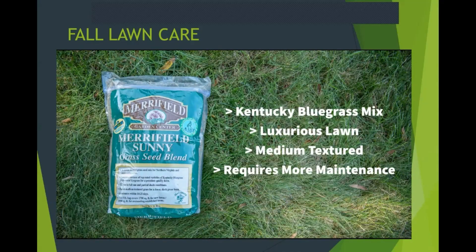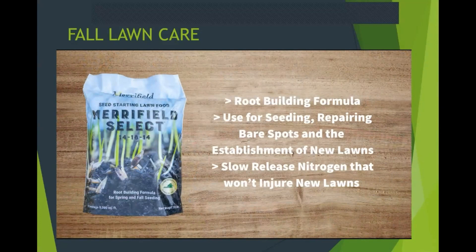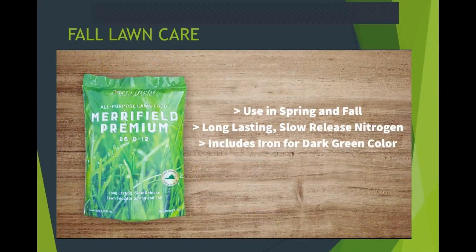We also offer Merrifield Sunny, a Kentucky bluegrass blend that gives that dark blue-green, dense, plush lawn everybody loves, but it requires more maintenance commitment — specifically keeping it watered during hot dry weather and giving it additional fertilizer. We also custom blend two lawn fertilizers. Merrifield Select is a starter lawn food with phosphorus, which enhances germination and establishment of new lawns — use it when seeding, repairing bare spots, or starting a new lawn. Otherwise, use Merrifield Premium, a zero-phosphate slow-release fertilizer that's long-lasting, gives a nice dark green consistent color, and builds a dense, healthy lawn.